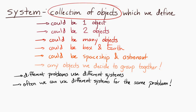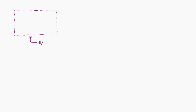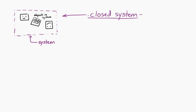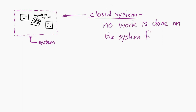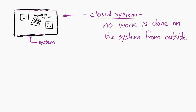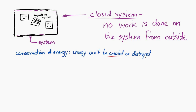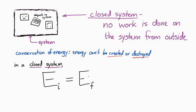Let's say we have a system — I'll draw it with a nice dotted line — and there's stuff inside. If this system is closed, what we mean is that no work is done on that system from the outside. Combining that with conservation of energy, which says energy can't be created or destroyed, means that in a closed system no energy is created, destroyed, or transferred from the outside.